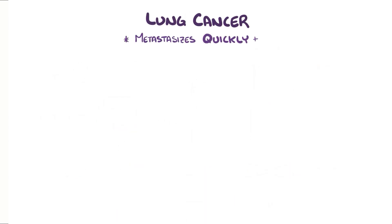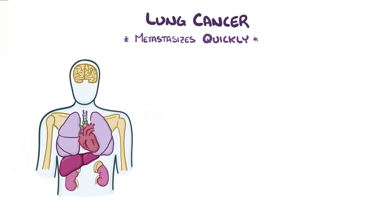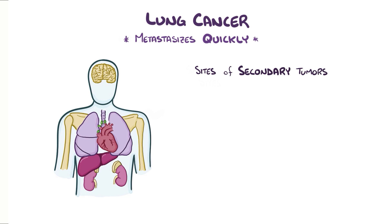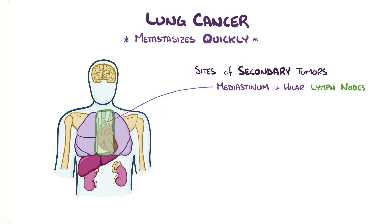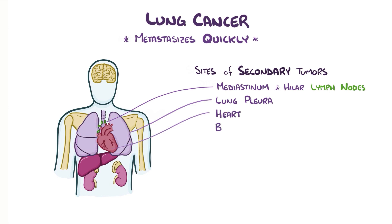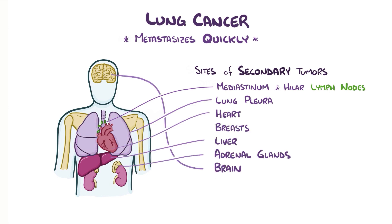Once it develops, lung cancer tends to metastasize quickly, rapidly establishing sites of secondary tumors in other tissues. Tissues particularly at risk as a secondary site are the mediastinum and hilar lymph nodes because of their proximity to the lungs. But other sites include the lung pleura — the lining of the lungs — as well as the heart, breasts, liver, adrenal glands, brain, and bones.